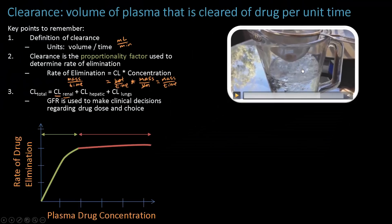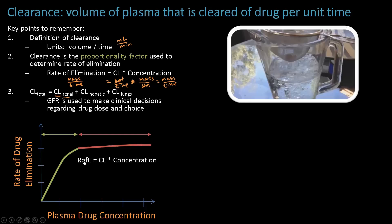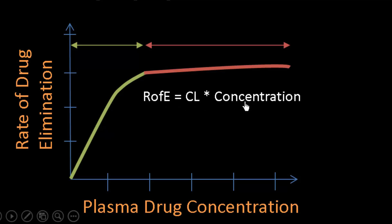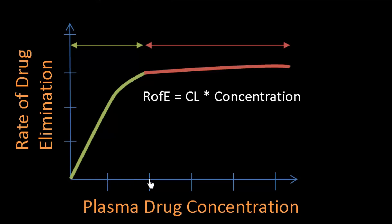Moving to point two: clearance is the proportionality factor used to determine the rate of elimination, expressed as rate of elimination = clearance × concentration. This equation applies under first-order kinetics. On a graph with rate of elimination on the y-axis and plasma drug concentration on the x-axis, as concentration increases, the rate of elimination goes up proportionally. Clearance is the proportionality factor that describes the slope of that relationship.